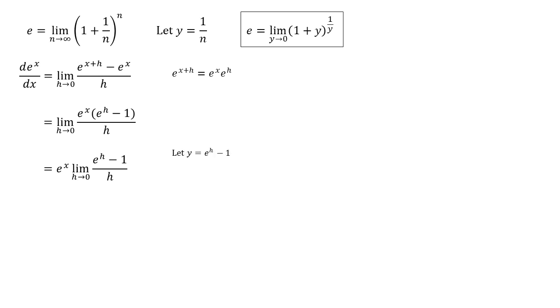So we're going to let y equal e to the h minus 1 on the top of the fraction. Rearranging this, we get that e to the h equals 1 plus y, so h equals ln of 1 plus y. We can also see that as h tends towards 0, we get that y tends towards e to the 0 minus 1, which is going to be 0 because e to the 0 is 1. So as well as substituting our values in for h, we can also change our limit from h tending towards 0 to y tending towards 0. So we've now got e to the power of x times by the limit as y tends towards 0 of y over ln 1 plus y.